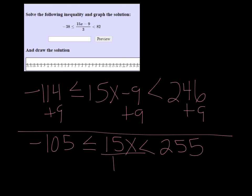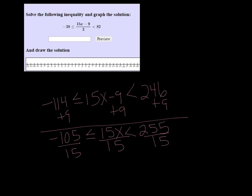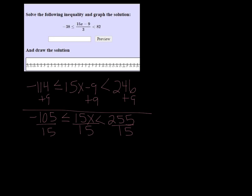And then finally we divide all parts by 15. Negative 105 divided by 15 is going to be negative 7. And 255 divided by 15 is 17.